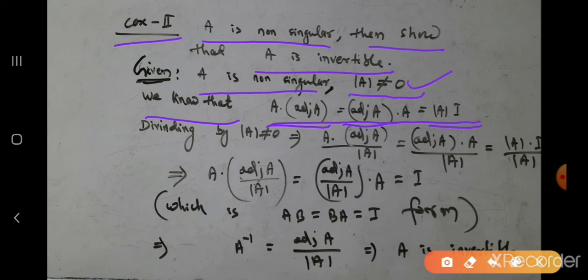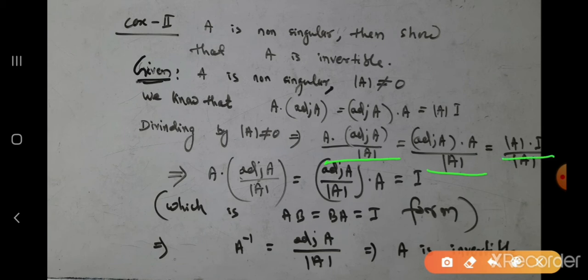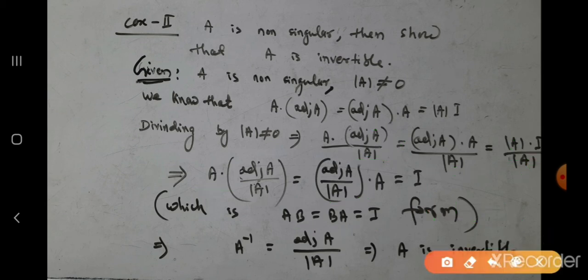Since det(A) ≠ 0, we divide all terms by det(A). This gives us A · (adj(A) / det(A)) = (adj(A) / det(A)) · A = I. This is exactly the form AB = BA = I, meaning A inverse equals B. Comparing, we get A⁻¹ = adj(A) / det(A).